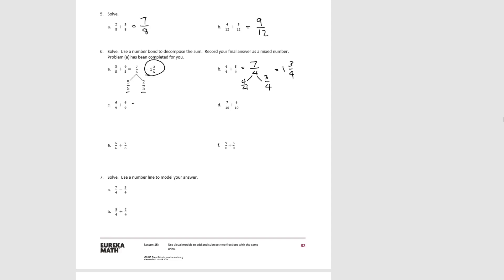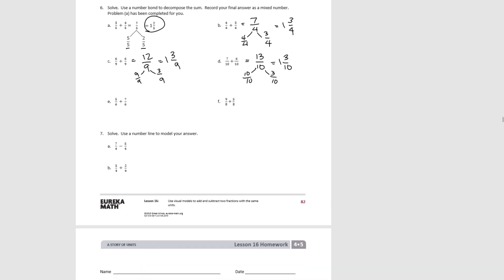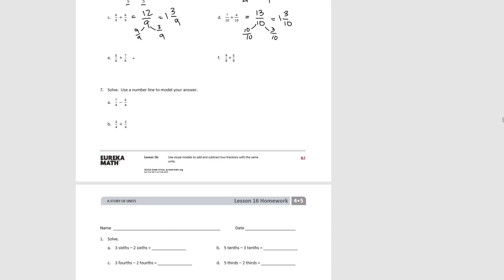For C, our unit is ninths: 6 plus 6 is 12. That decomposes into 9 ninths and 3 ninths, or 1 and 3 ninths. For D, our units are tenths: we started with 7, added 6, so we have 13 tenths. Decomposing, we end up with 1 and 3 tenths. For E, our units are sixths: 5 plus 7 is 12 sixths. This decomposes into 6 sixths and another 6 sixths, so we get 2 — two wholes.